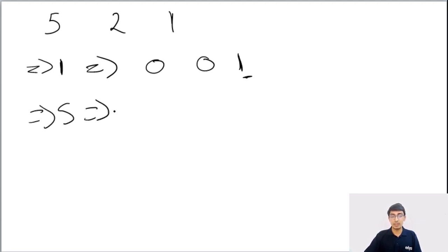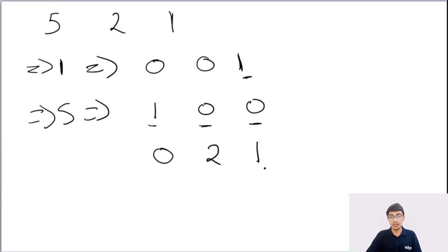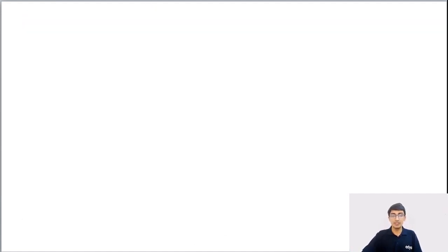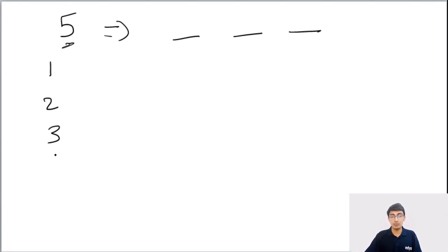To represent 5, we have multiple ways. We could use (1, 0, 0) — one 5-rupee coin, zero 2-rupee coins, zero 1-rupee coins. Or we can do (0, 2, 1) — two 2-rupee coins and one 1-rupee coin. Or (0, 0, 5) — five 1-rupee coins. So we have many ways of representing a number using 5, 2, and 1 rupee coins. The question is: given n, we need the optimal arrangement such that not only can we make n, but also 1, 2, 3, 4, and all values up to n.